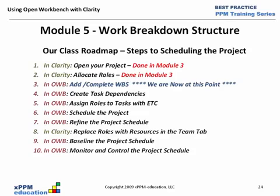Item one on the roadmap is where we open the project — we begin by opening the project in Clarity, which was done in Module 3. Item two, in Clarity, we allocate roles as part of the project team, also done in Module 3. Then next, in Open Workbench, we're ready to build, add, and complete the work breakdown structure, which is the module we're at now.